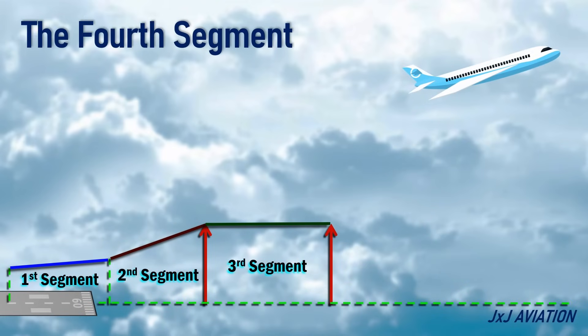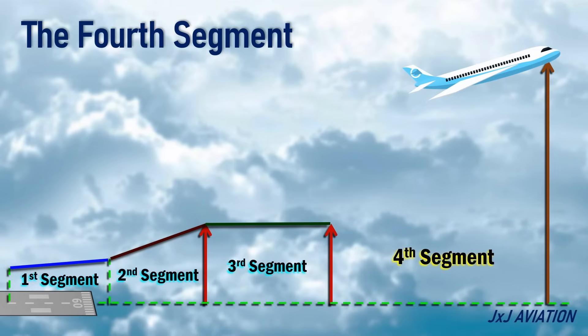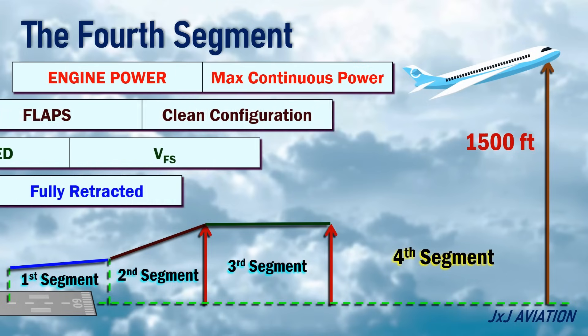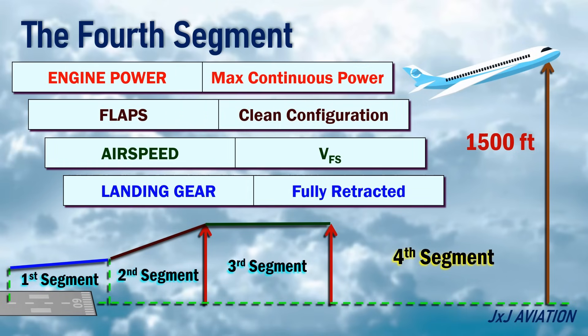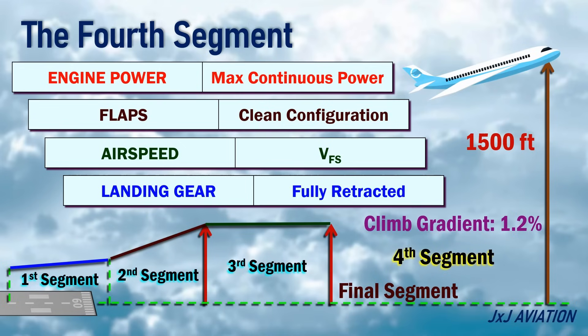The fourth segment. Here, the aircraft climbs from acceleration height to 1,500 feet above ground level. The engine power is reduced to maximum continuous power. During the climb, the required climb gradient in this segment is 1.2%. This is the final segment.